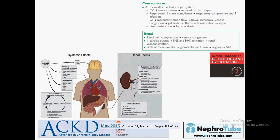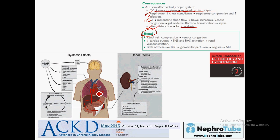With increased intra-abdominal pressure, the inferior vena cava is compressed, decreasing venous return to the heart and causing decreased cardiac output. There is also decreased chest compliance because the diaphragm is not freely mobile. GI consequences include decreased mesenteric flow, bowel ischemia, gut edema, bacterial translocation, sepsis, and liver compression causing lactic acidosis. Regarding the kidney, increased intra-abdominal pressure compresses the renal veins, causing venous congestion.